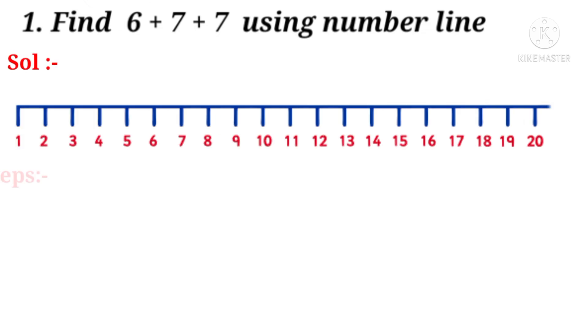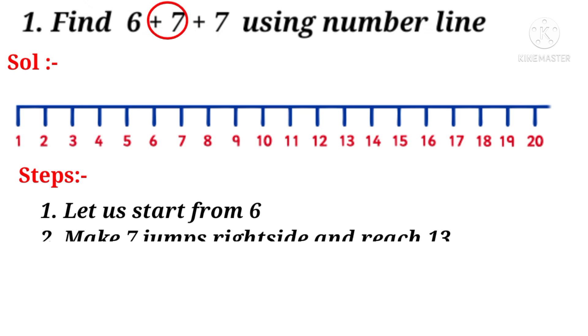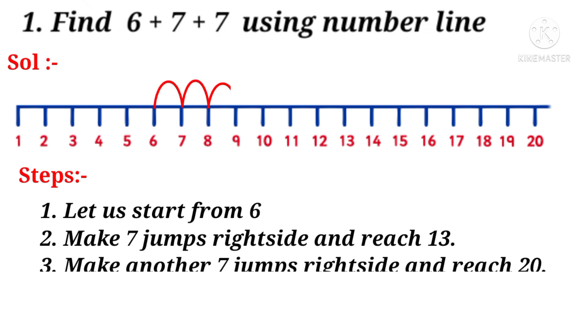Solution: Take the number line. First number is 6. So starting from 6, plus 7 indicates right side 7 jumps. So starting from 6 we make 7 jumps: 1, 2, 3, 4, 5, 6, 7. Then we reach number 13.